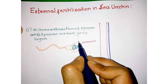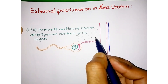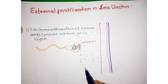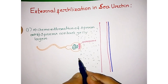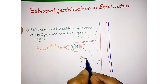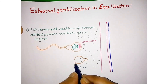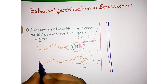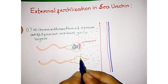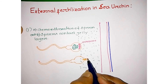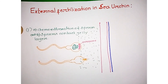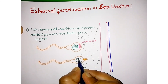There is a jelly coat on the egg. When the sperm contacts with this jelly coat, the acrosomal process is formed. When sperm contacts with the jelly coat, the formation of the acrosomal process occurs. This is the acrosomal process, and this is the nucleus. The role of this acrosomal process leads into the second step.